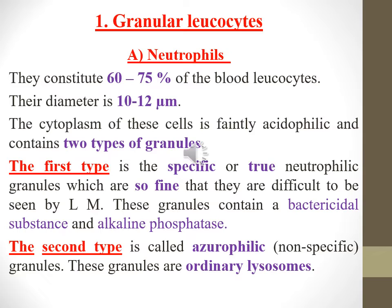Granular leukocytes — neutrophils. They constitute about 60 to 75 percent of the blood leukocytes. Their diameter is about 10 to 12 micrometers. The cytoplasm is faintly acidophilic and contains two types of granules. The first type is the specific or true neutrophilic granules, which are so fine they are difficult to be seen by light microscope. These granules contain a bactericidal substance and alkaline phosphatase.